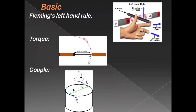Before we see the Ballistic Galvanometer, let's see the basics. Fleming's Left Hand Rule: take your left hand and stretch your thumb, forefinger, and middle finger mutually perpendicular to each other. Your thumb indicates the direction of the force, your middle finger indicates the direction of the current, and your forefinger indicates the direction of the magnetic field. Fleming's Left Hand Rule is used to find the direction of the force when we know the magnetic field and direction of the current.